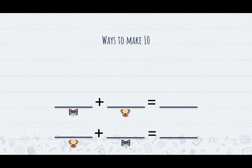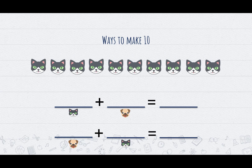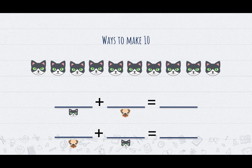Today we're going to be counting cats and dogs. This is our first way to make 10. We have our groups of cats and our groups of dogs. I see in my picture that all I have are cats, and that tells me I don't have any dogs. Remember, when we don't have any of one group, we have 0 — so we have 0 dogs.